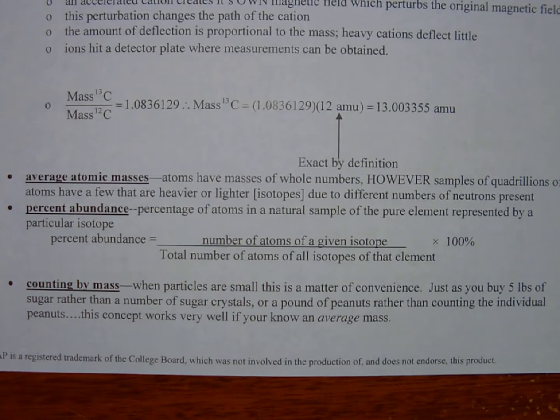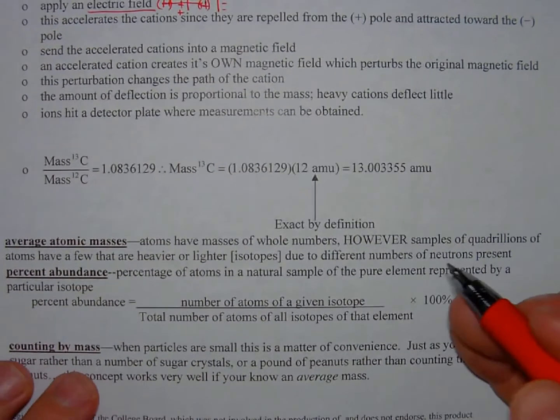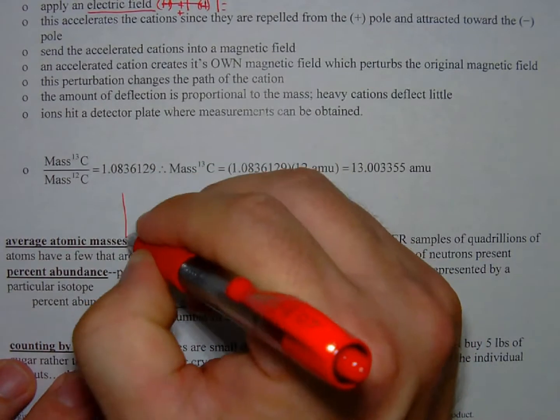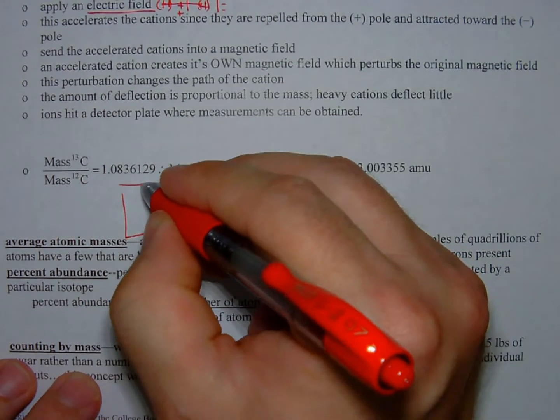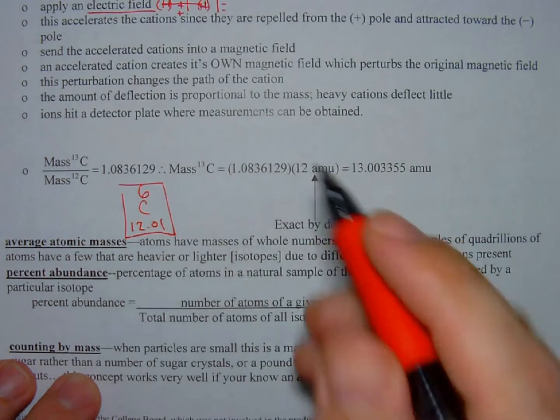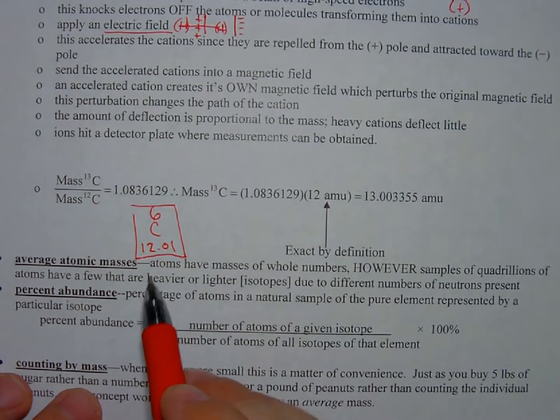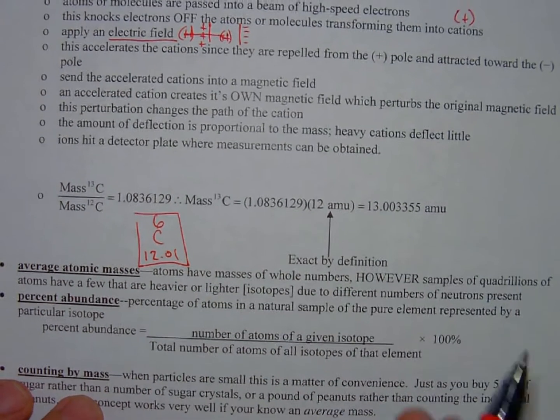Average atomic masses - what we want to point out here is if you look at the periodic table, let's use carbon because we're talking about carbon. You're going to see a box that looks like this. Atomic number six because there's six protons, but the average atomic mass is going to be 12.01.